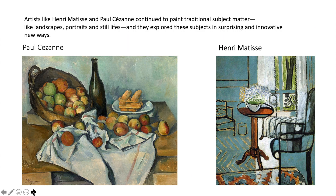Artists like Henri Matisse and Paul Cézanne continued to paint traditional subject matter like landscapes, portraits, and still lifes — subjects of art for hundreds of years — but they explored these subjects in surprising and innovative new ways.